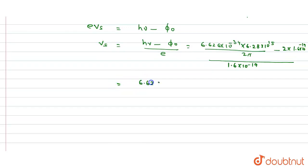On solving, we get 6.626 × 10⁻¹⁹ minus 3.2 × 10⁻¹⁹ divided by 1.6 × 10⁻¹⁹.